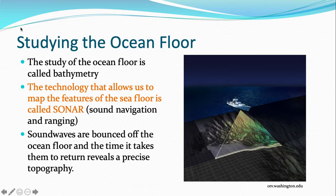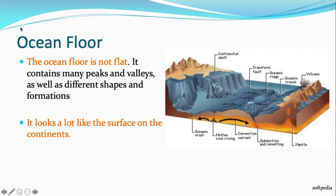So the topography is like the elevation — the various changing elevations of the seafloor — so you can see mountains and valleys and stuff like that. The ocean floor is not flat. It contains many peaks and valleys as well as different shapes and formations. It looks a lot like the surface on the continents.